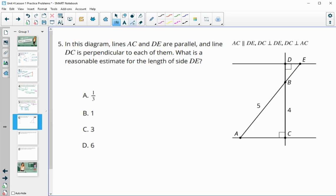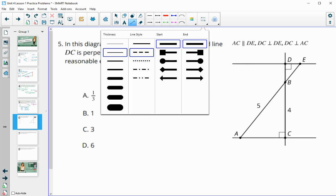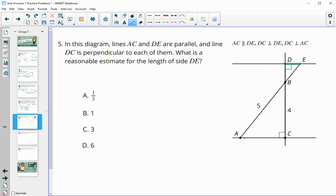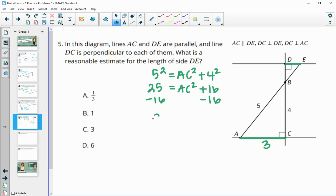Number five in this diagram, lines AC and DE are parallel, and line DC is perpendicular to each of them. What is a reasonable estimate for DE? So we're looking for a reasonable estimate for this one. So we need to have this to kind of be able to compare. And so we see that this is a right triangle down here with a hypotenuse of five and a leg of four. So maybe you've used this one enough to know that this is going to be three. Otherwise, you can do the Pythagorean theorem quickly to figure that out. So 5 squared equals AC squared plus 4 squared. So you'll have 25 equals AC squared plus 16. Subtract 16 to get 9 equals AC squared. And then square root that.